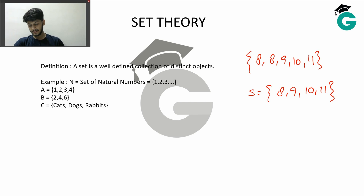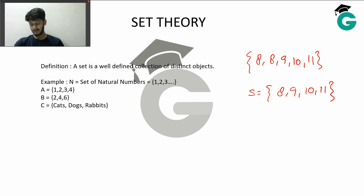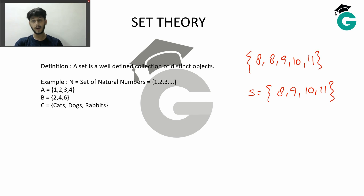Some further examples: the set of natural numbers is {1, 2, 3, …, n, ∞}. Other examples include A = {1, 2, 3, 4}, B = {2, 4, 6}, C = {cats, dogs, rabbits}, D = {your favorite superstars like Salman Khan, Aamir Khan, Bobby Deol}.